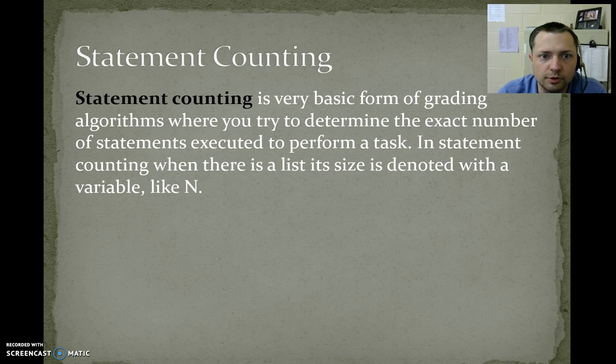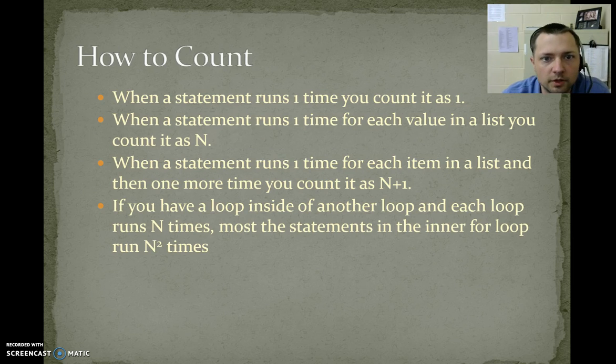Statement counting is a very basic form for grading algorithms, where you try to determine the exact number of statements executed to perform a task. In statement counting, when there is a list, its size is denoted with a variable. We'll usually use n. When a statement runs one time, you count it as 1. When a statement runs one time for each value in a list, you count it as n. When a statement runs one time for each item in the list, and then one more time, you count it as n plus 1. If you have a loop inside another loop, and each loop runs n times, most of the statements in the inner loop will run n squared times.